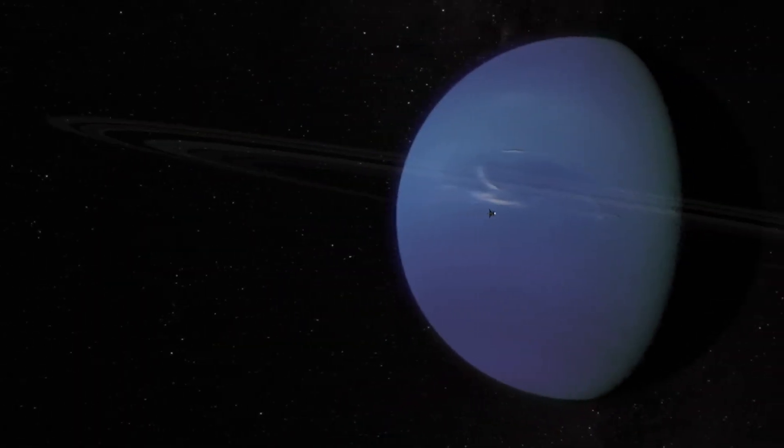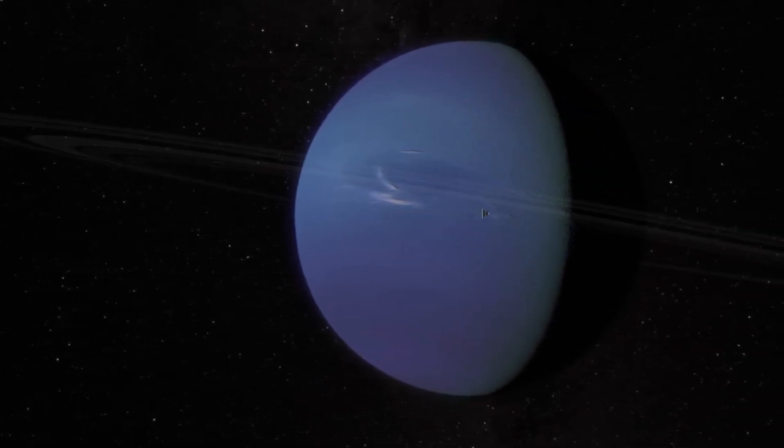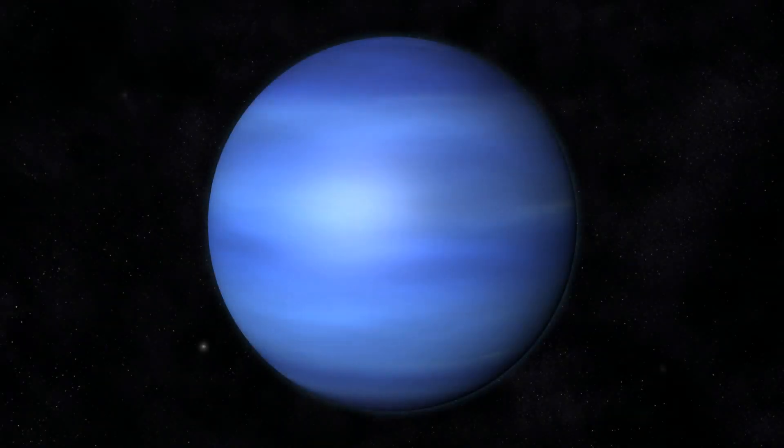Interestingly, when the Hubble Space Telescope observed Neptune five years later, the spot disappeared, leaving researchers eager to understand this extreme wind phenomenon.